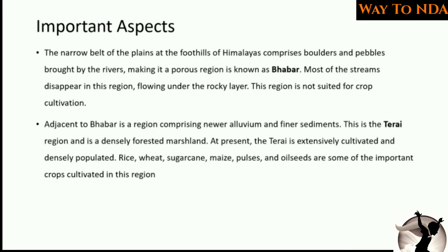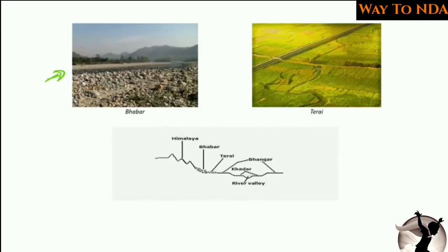There are various divisions within the plains. The narrow belt at the foothills of the Himalayas comprises boulders and pebbles. When the river flows down from the Himalayas and reaches the foothills, it carries this type of boulder material. This zone is called the Bhabar area.